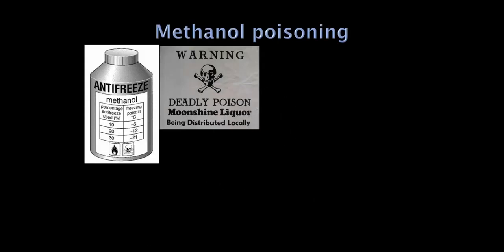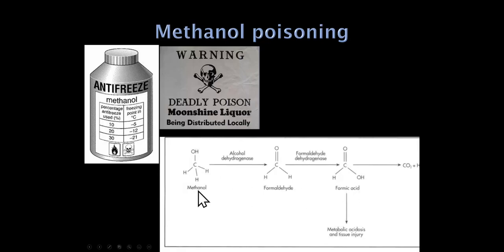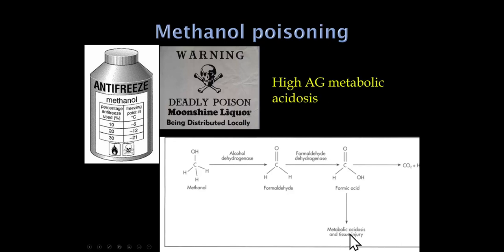Next is methanol poisoning. This can occur through ingestion of antifreeze, or sometimes through attempts to home-manufacture alcohol — moonshine — that goes wrong. Alcohol is two carbons; methanol is one carbon. The problem is that methanol gets converted to formate, or formic acid, which is harmful to the brain and especially to the optic nerves. On blood tests, patients with methanol poisoning will have a high anion gap metabolic acidosis. If you see that in a confused patient, think methanol poisoning.